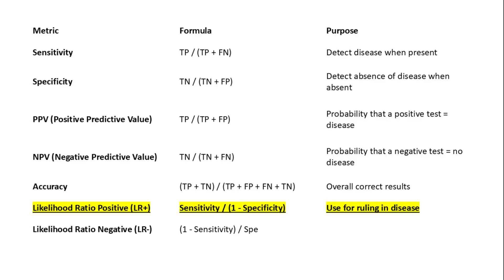Next, specificity measures a test's ability to detect the absence of disease when the disease is truly not present. The formula is true negatives over the sum of true negatives and false positives.